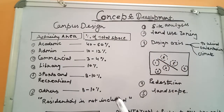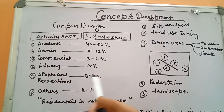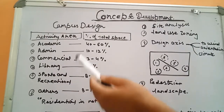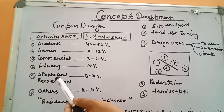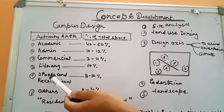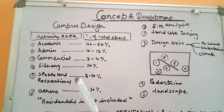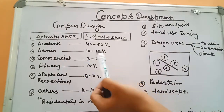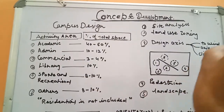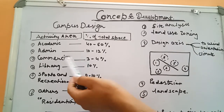These are the main categories, and subcategories fall under each head. For example, under sports and recreational we include auditoriums, sports activities, and playground areas. Under commercial we keep the cafeteria, canteen, and kiosk.